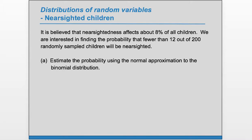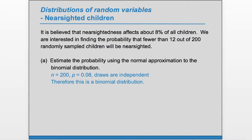Part A: estimate the probability using the normal approximation to the binomial distribution. Before we do this, let's first verify that this scenario creates a binomial distribution. We are looking at out of 200 — whenever you hear 'this many out of n' that makes us think binomial. So we have n = 200, p = 0.08, and because they are randomly sampled we can consider the draws to be independent. So it is a binomial distribution and we want fewer than 12, meaning we want the probability that X is less than 12.